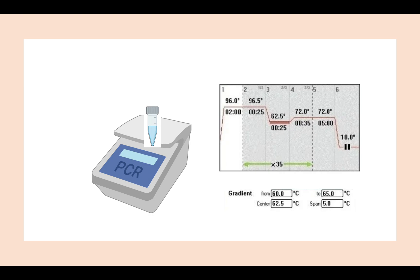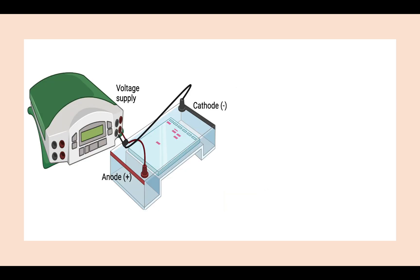When you program your PCR reaction, the temperature gradient needs to be set up for the annealing step. Here is an example of a gradient PCR program. You can see that the annealing temperature is set as a gradient, ranging between 60 degrees Celsius and 65 degrees Celsius, for a total of 35 cycles.